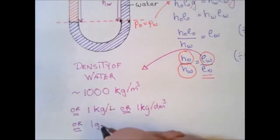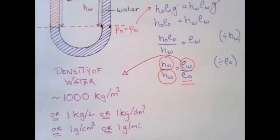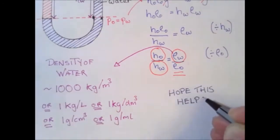1 kilogram per liter, 1 kilogram per decimeter, 1 gram per centimeter cubed, 1 gram per milliliter. That you may remember from the density required practical.